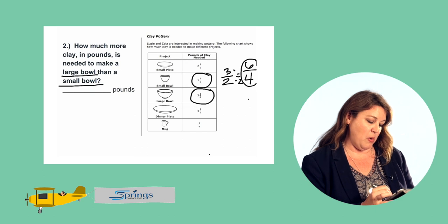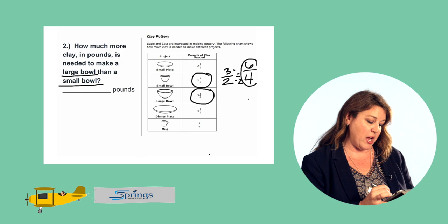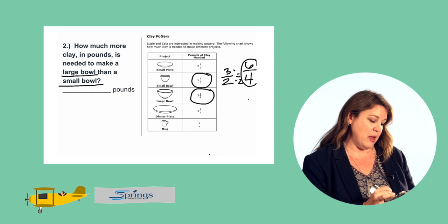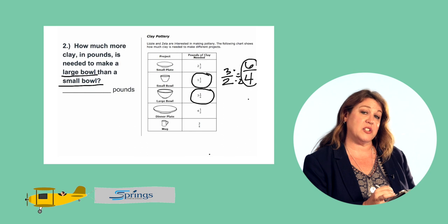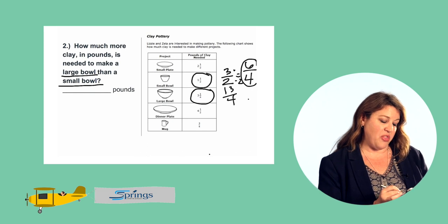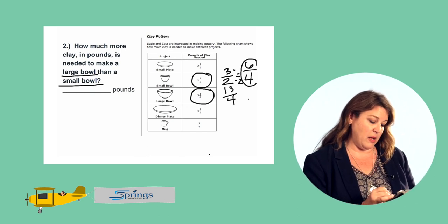And a large bowl, it's already in fourths, but let's also convert our mixed number to an improper fraction. And so the whole number of three, we're talking about fourths, it would be three times four is 12 fourths, plus the additional one fourth means we have 13 fourths. So it takes 13 fourths pounds of clay to make a large bowl.